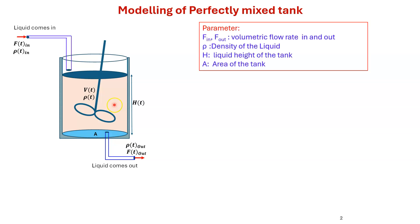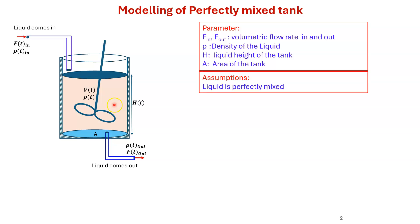The key parameters are: F_in and F_out — volumetric flow rates in and out; ρ — density of the liquid; H — liquid height in the tank; and A — area of the tank. The assumption here is that the liquid is perfectly mixed.